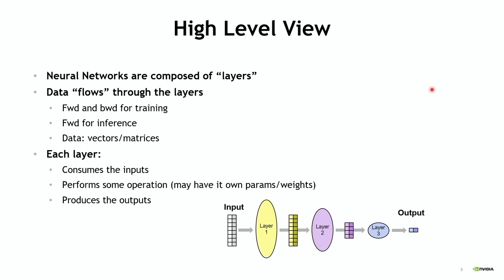At a high level, a neural network is made up of a set of layers where data flows from input to output. For training, data flows left to right through layers towards the output, then a loss is computed and gradients flow backwards, updating weights. For inference, data flows only forwards. Data traditionally is really sets of vectors, which oftentimes form matrices. Whatever the input is on the application side, by the time the neural network operates on it, it has been turned into a set of vectors. Each layer consumes its inputs, performs some operation, and produces outputs.